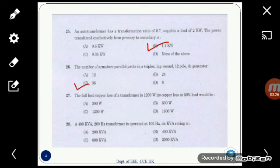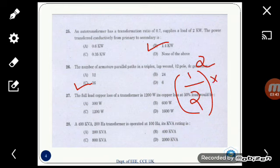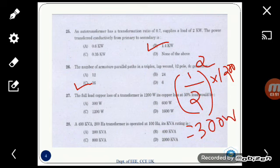The full load copper loss of a transformer is 1200 watts. Its copper loss at 50% load would be? Here the load is reduced by 50%, that is half. So the equation is (1/2)² × the full load copper loss, that is 1200 watts. We will get just 300 watts. So the answer here is 300, that is option A.